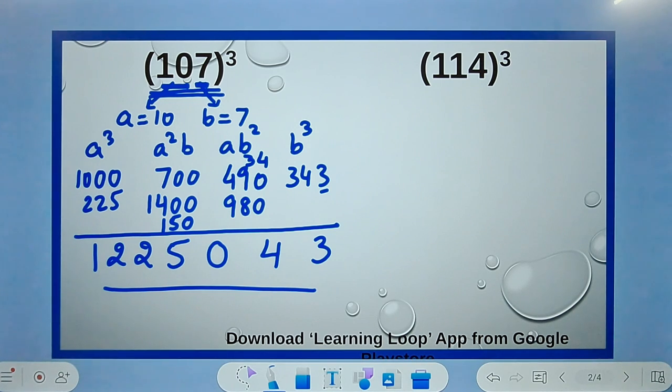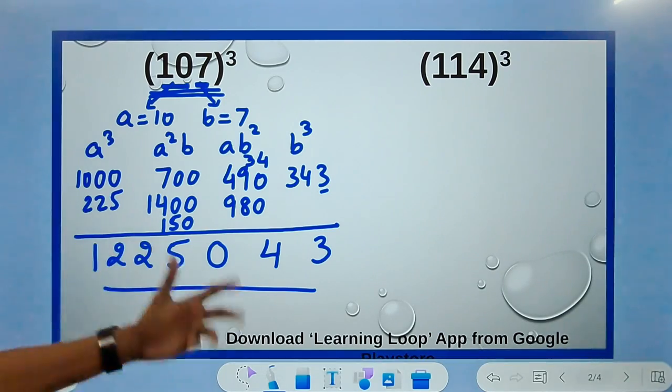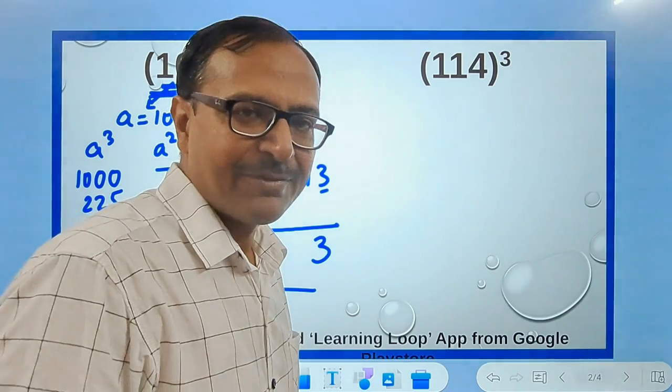Now you can pick up the calculator and check: 107³ is 1,225,043. You will be surprised to see the result. Things are not difficult, friends, it's just about thinking about the numbers correctly.